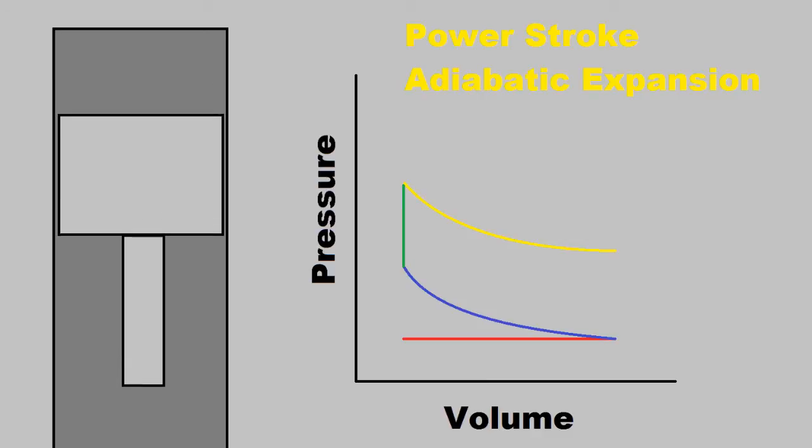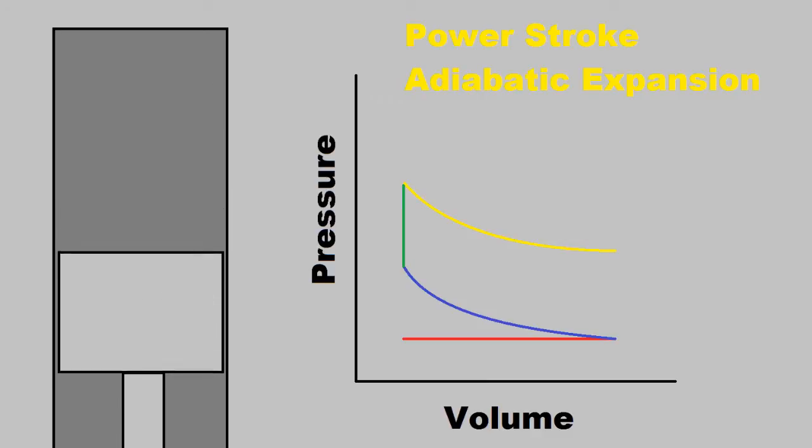After the gas combusts, we have the power stroke adiabatic expansion. The volume goes from the min to the max, and the pressure drops.